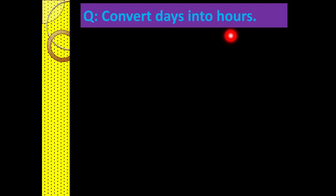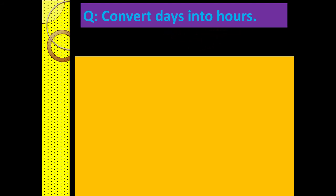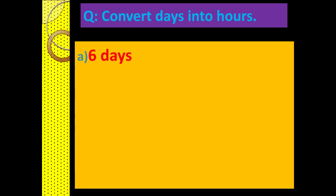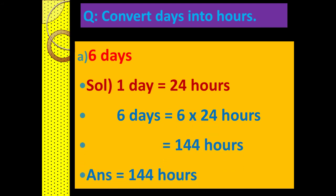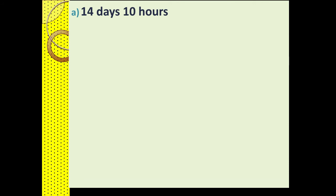Now we will learn how to convert given days into hours. Since we know that one day has 24 hours, we will now convert 6 days into hours. As we already discussed, one day has 24 hours, so 6 days has 6 multiplied by 24 hours. After multiplication we get 144 hours in 6 days.